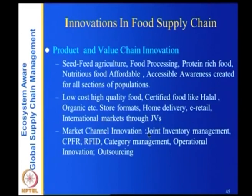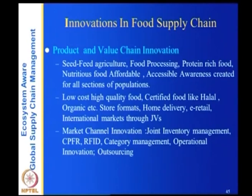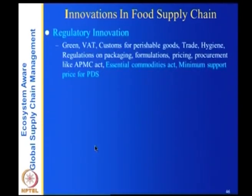Innovations include low-cost high-quality certified food like halal and organic, various store formats, home delivery, e-retail, and international markets through joint ventures. Market channel innovations include joint inventory management, CPFR, RFID, category management, operational innovation, and outsourcing — things routinely done in supply chains in foreign countries. Regulatory innovations include green customs for perishable goods, trade hygiene regulations on packaging, formulations pricing, and procurement acts like the APMC Act and Essential Commodities Act and Minimum Support Price for PDS.